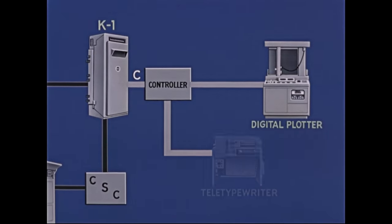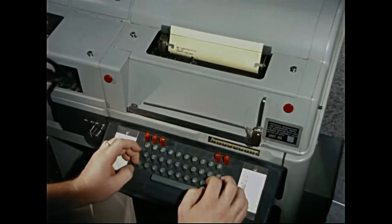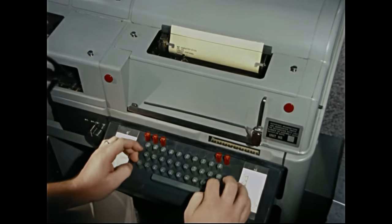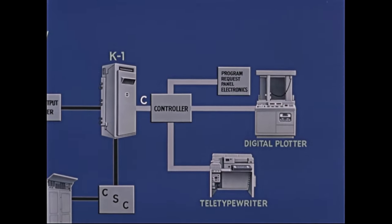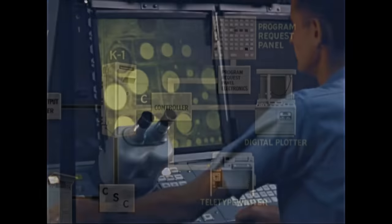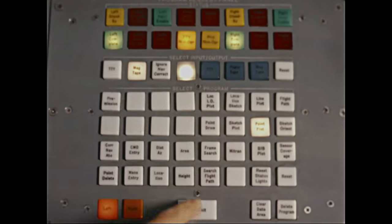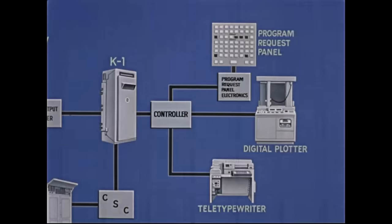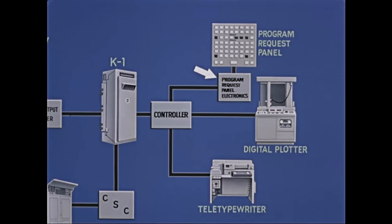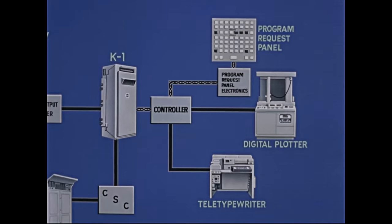Channel C also connects to the station's teletypewriter, enabling the operator to input data to the computer during operation of the station programs and to receive output data from the computer. Finally, this channel connects through the program request panel electronics to the program request panel. The request panel gives either operator the means of selecting the program he wants to employ and the way he wants the results presented — as a teletype printout, digital plot, or whatever. The program request panel electronics is a gray box that gives the computer the electronic code for the requested program.